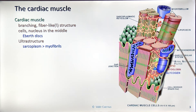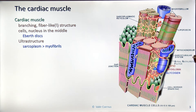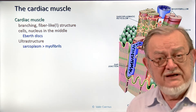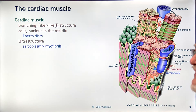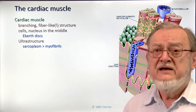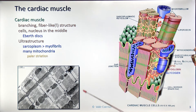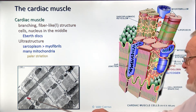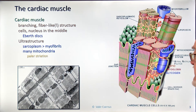First of all, the proportion between the myofibrils and the sarcoplasm is pushed in favor of the sarcoplasm, which means that because of the lesser quantity of myofibrils, the cardiac muscle is relatively weaker. However, because of the abundant sarcoplasm, it has a lot of myoglobin — a very large oxygen store — so it tolerates temporary oxygen lack better. It has many mitochondria. The myofibrils are very similar to those of the skeletal muscle, but between the myofibrils we have a lot of mitochondria, and this is why the striation is paler.